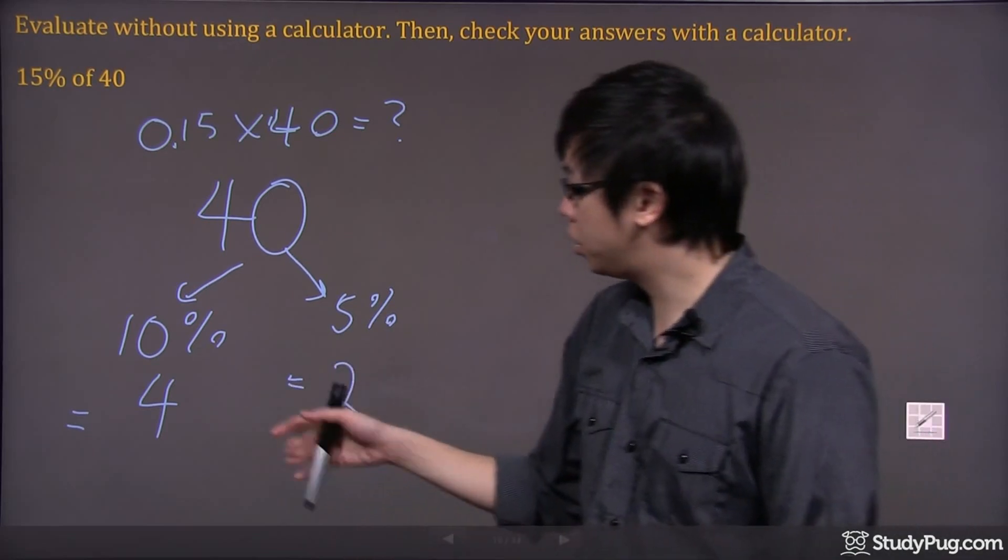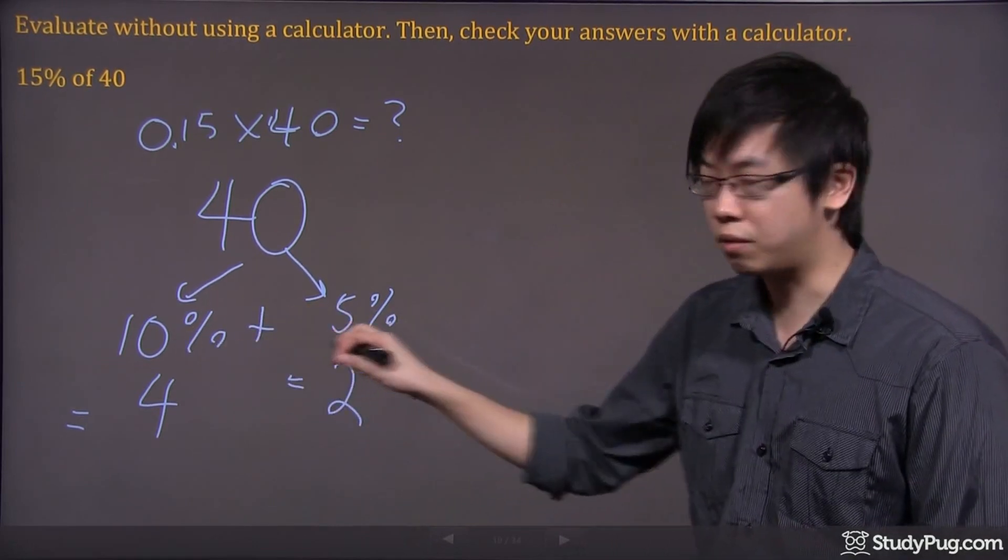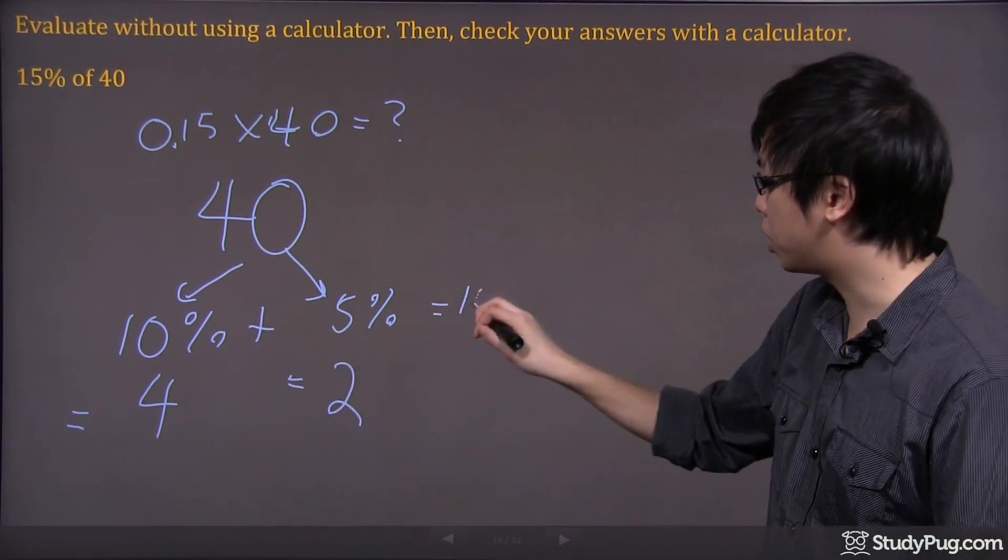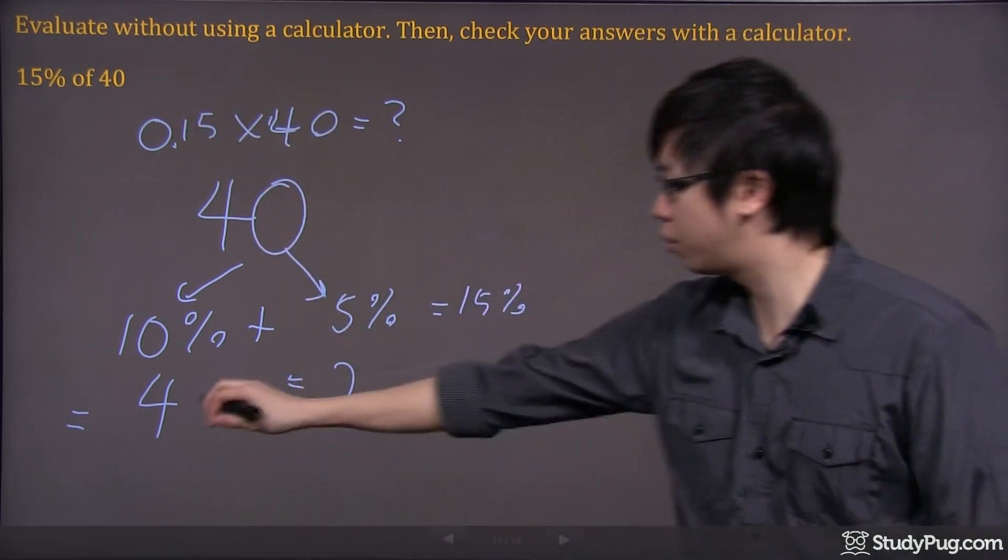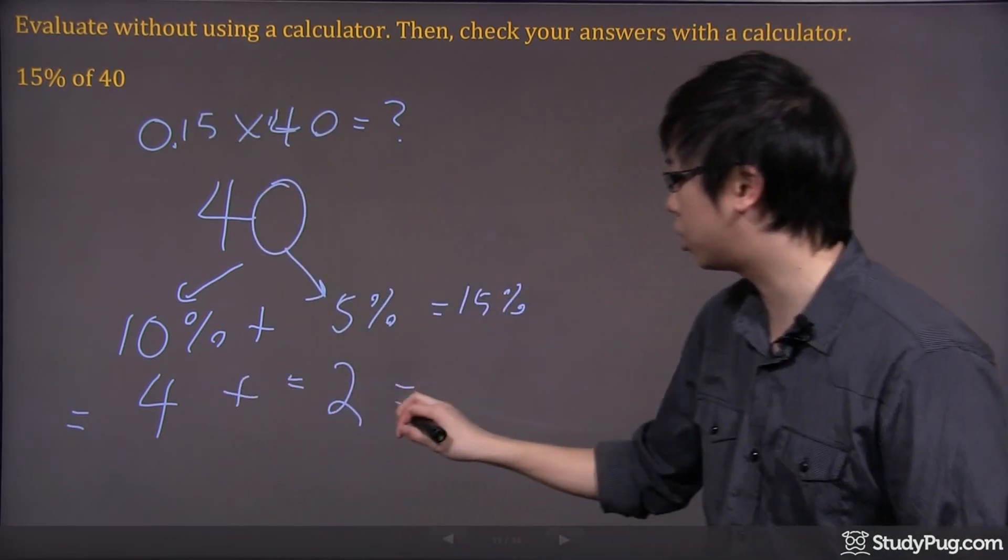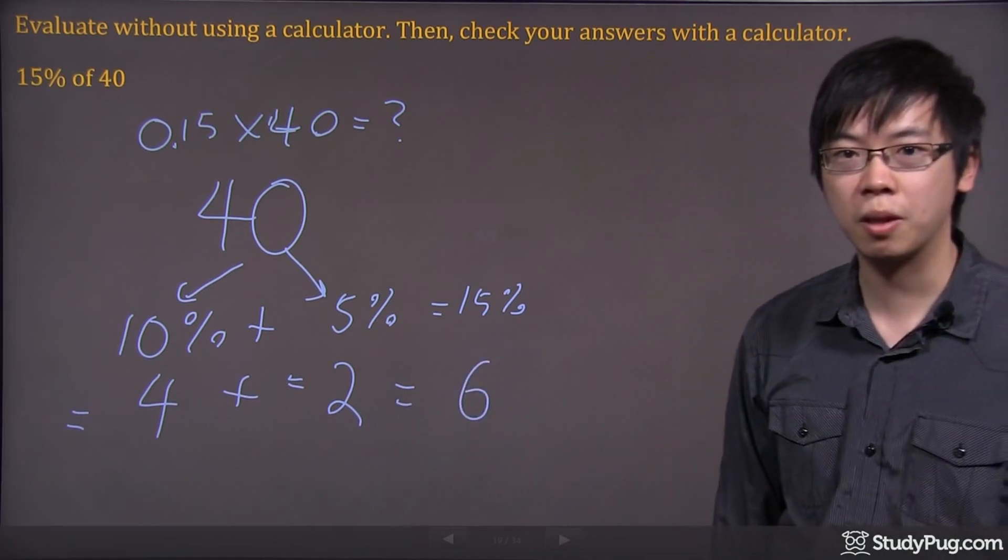So if I add up these two together, the 10% plus 5%, which is 15%, and that's what the question wants you to figure out, it's just 4 plus 2, which gives you 6.